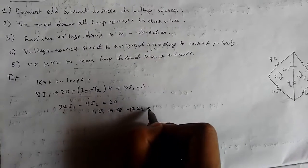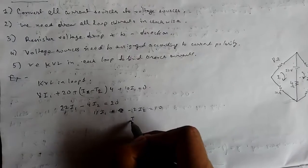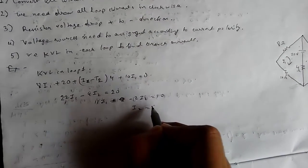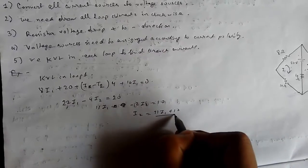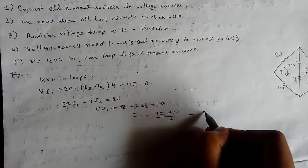So 11I1 - 2I2 equals 10, which means I2 equals (10 + 11I1)/2. Consider this equation 1.